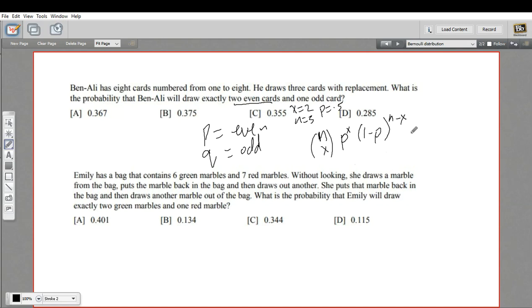Now we can start plugging in numbers. p to the x is 0.5 to the second power, times 1 minus p. 1 minus p is 0.5, so we have 0.5 to the first power since n minus x is 3 minus 2. Then we multiply by n choose x, which is n factorial over x factorial times n minus x factorial.